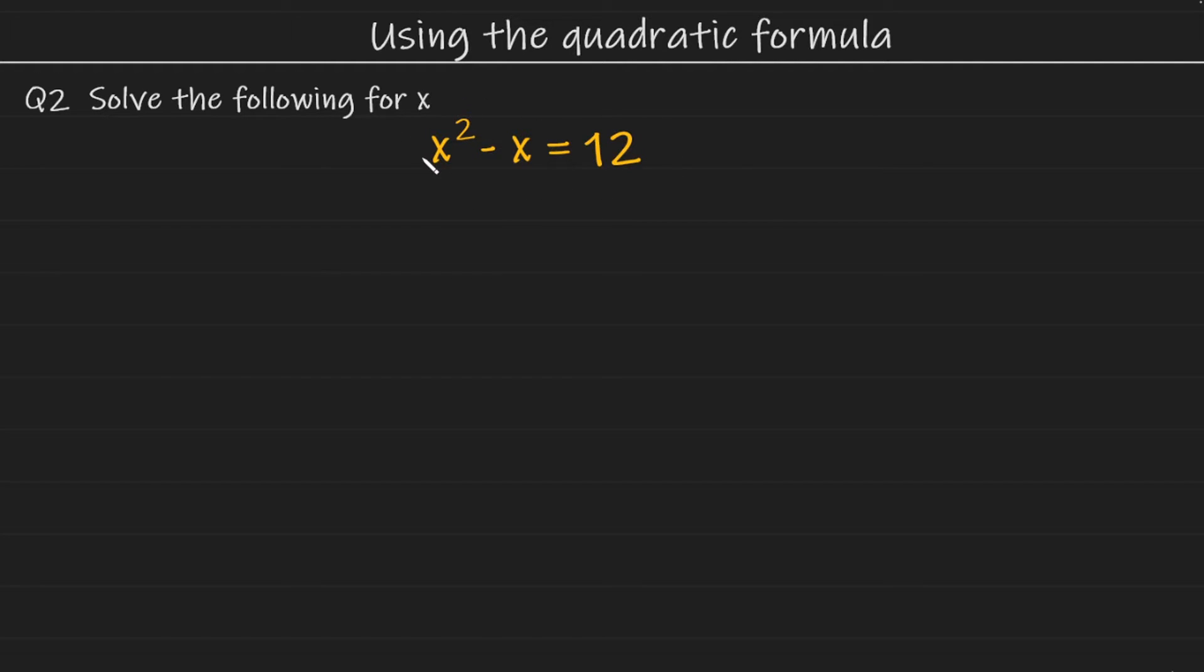However, there's a quick fix for this. You can just eliminate the 12 from the right-hand side by subtracting 12 from both sides of the equation. And this will give us the following.